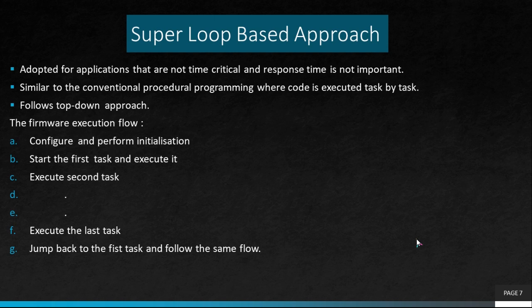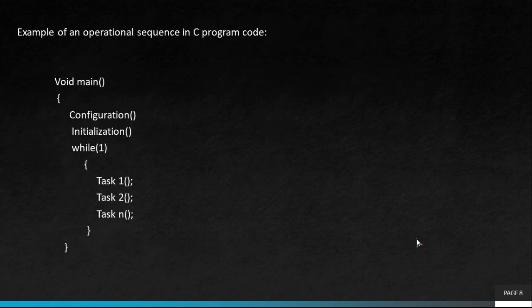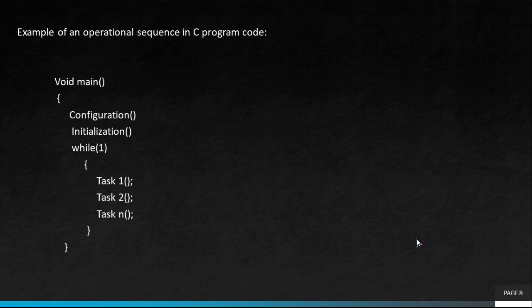Here is an example of a C program demonstrating this approach. We perform configuration and initialization, start the while loop, enter the loop, execute the first task, go to the second task, and finally go to the third task. This execution continues inside an infinite loop, which is why it is called the super loop based approach — we use a while(1) infinite loop.